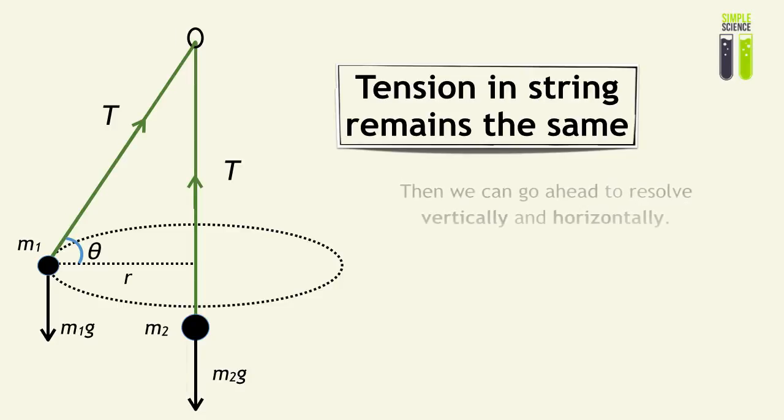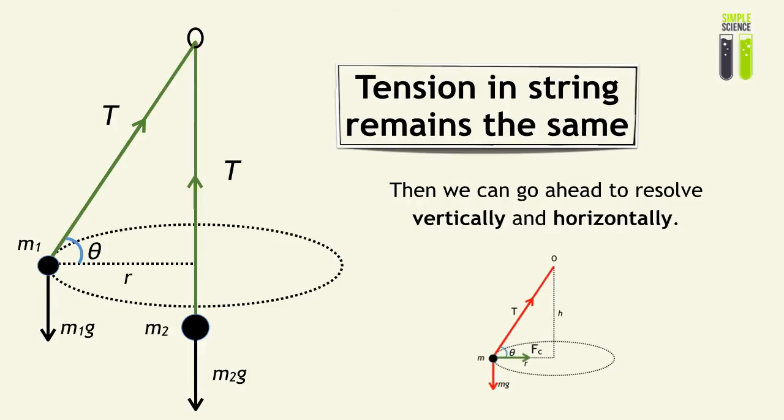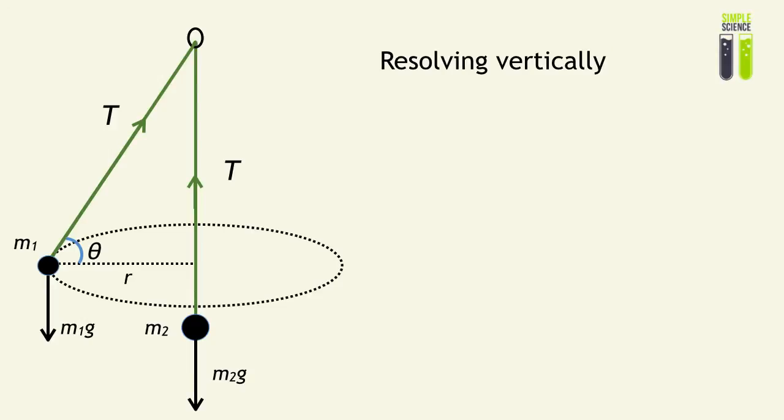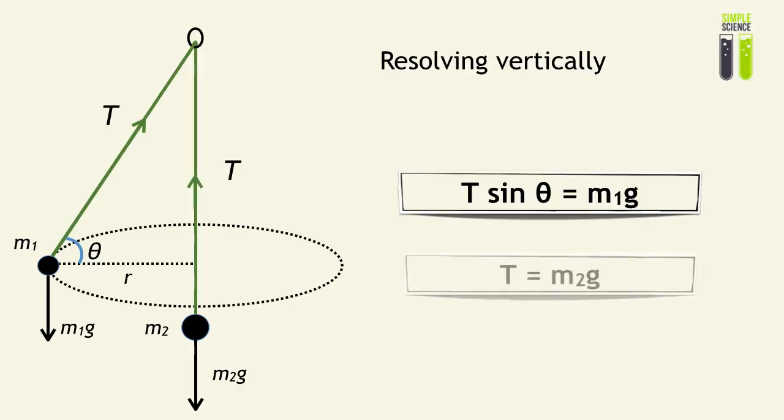We can resolve vertically and horizontally, just like how we solve questions related to the normal conical pendulum. When we resolve vertically for M1, we can see that T sin theta equals M1g. In other words, T sin theta equals the weight of M1. When looking at M2, T equals the weight of M2.